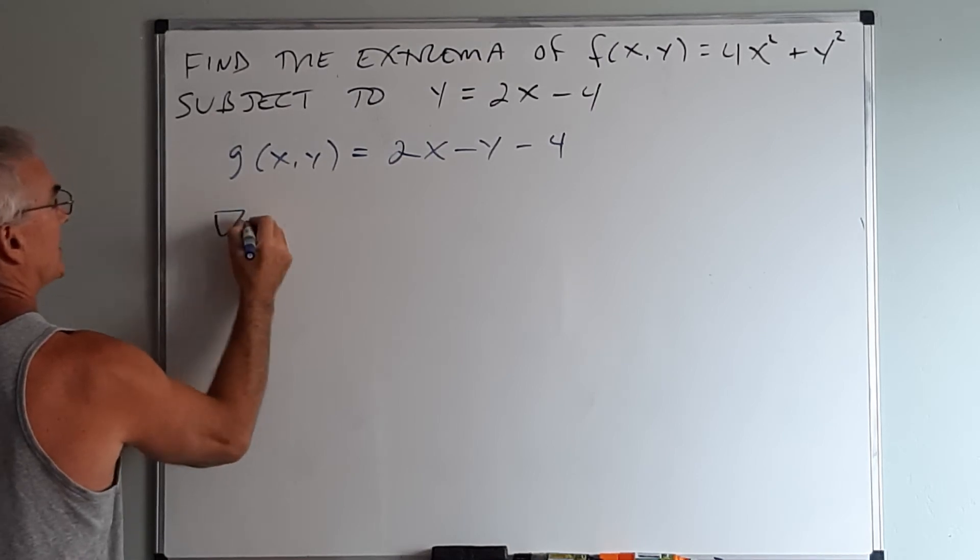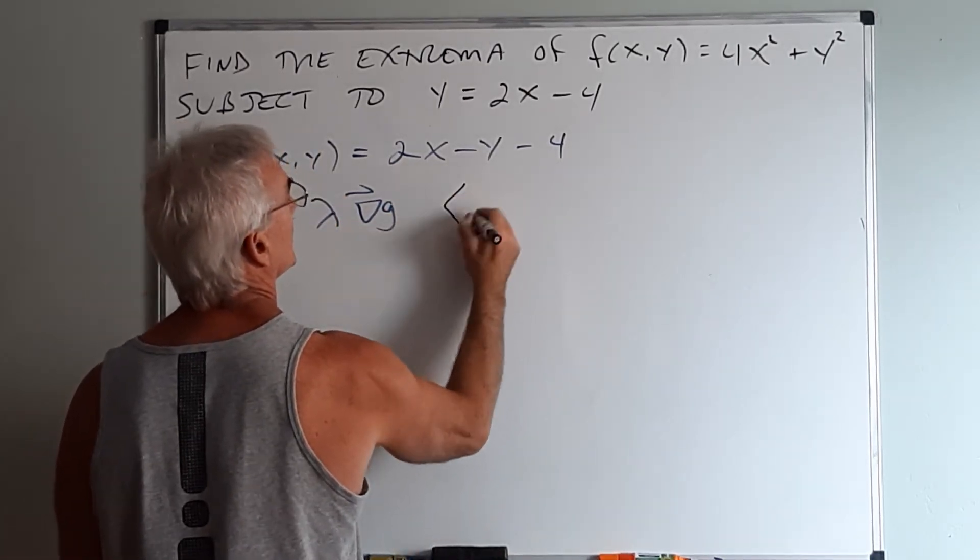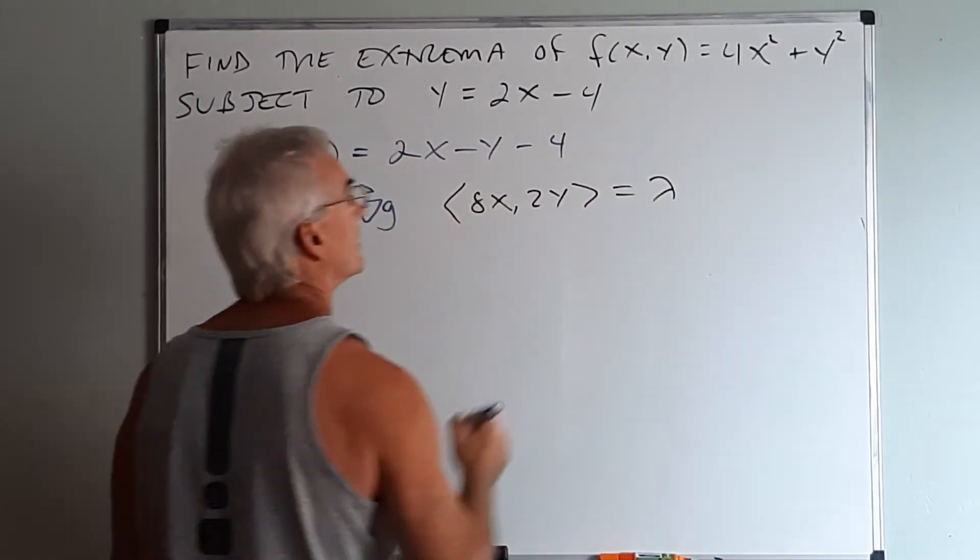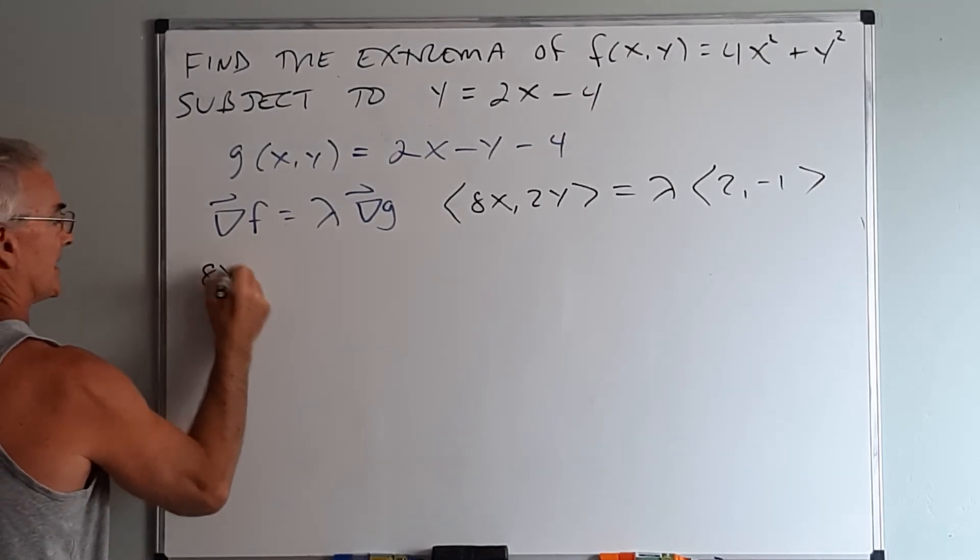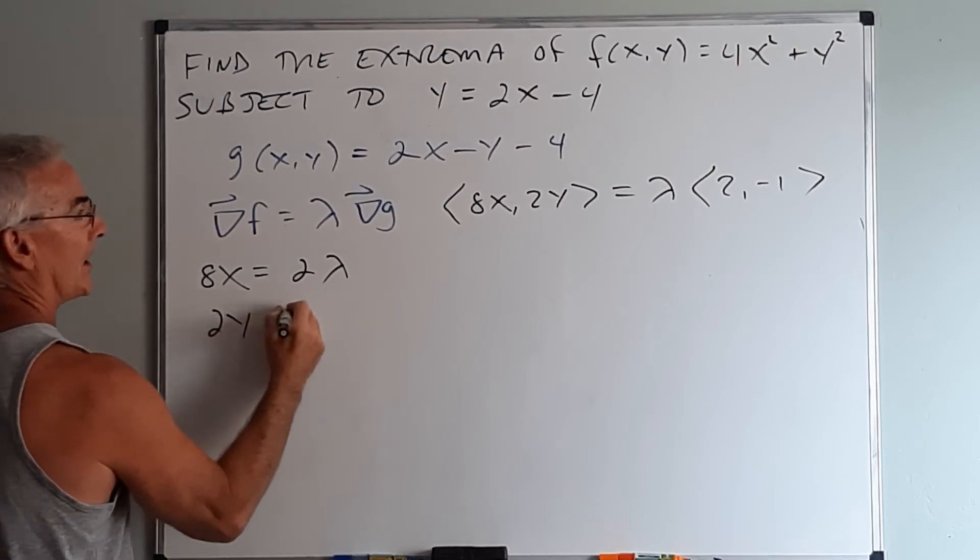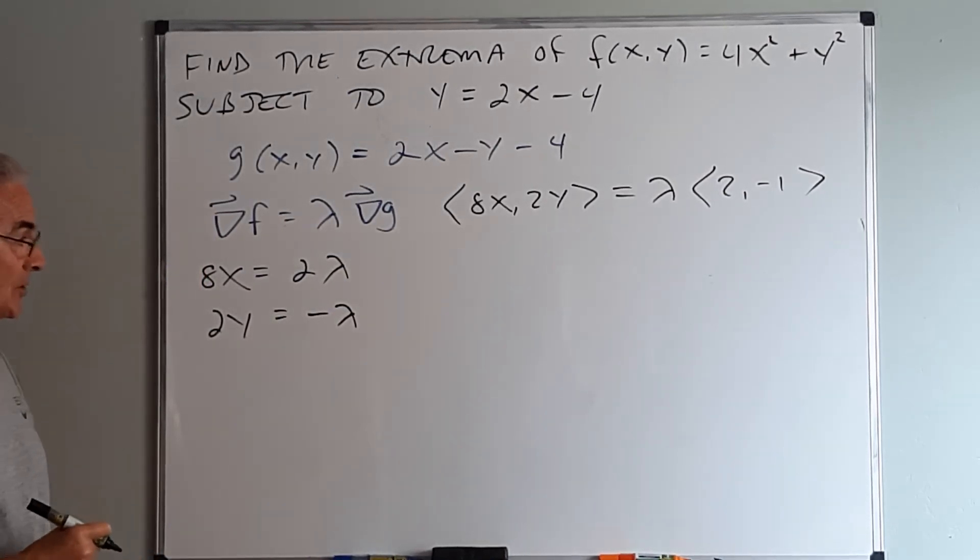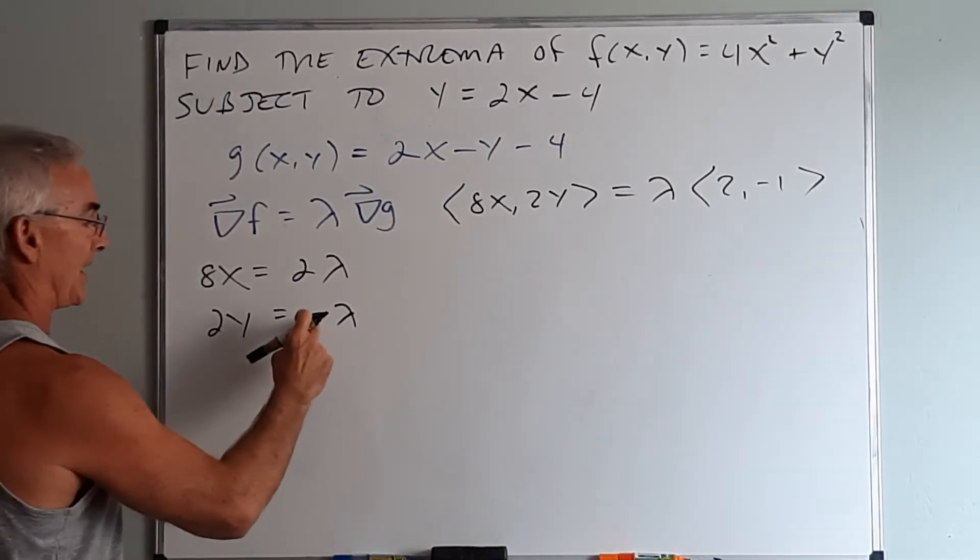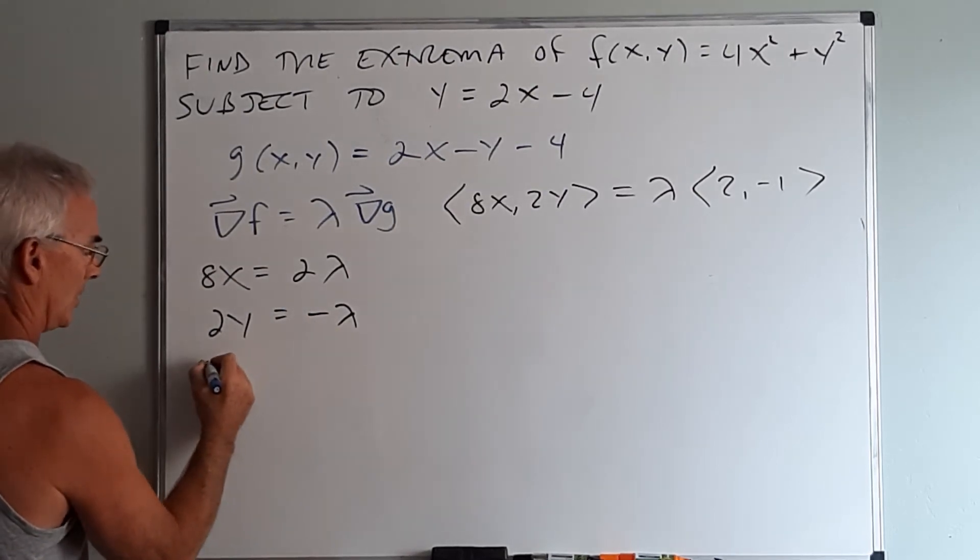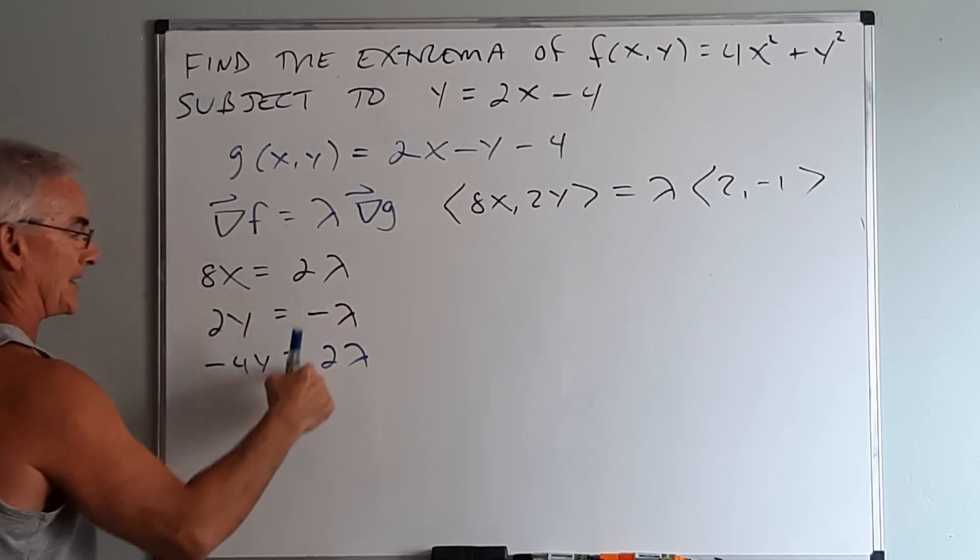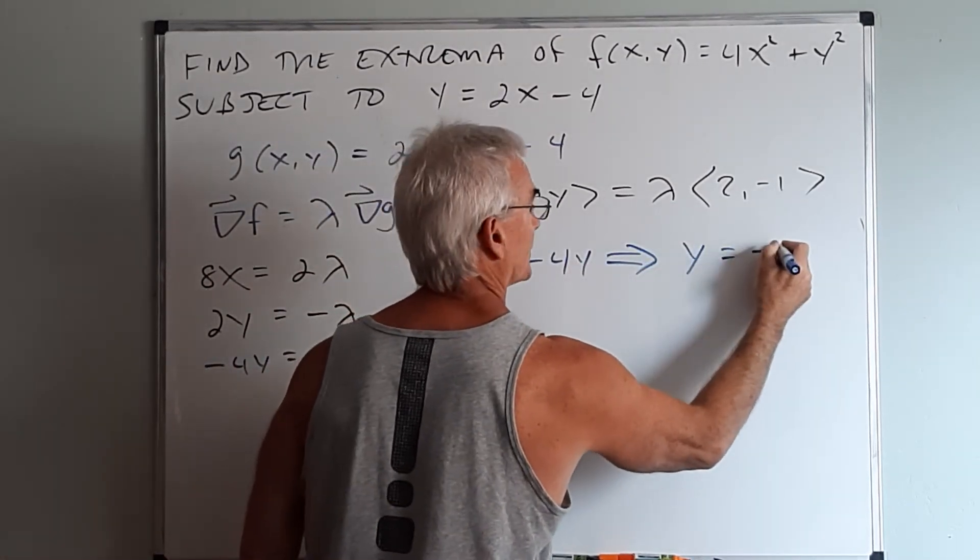Now at this point here we will set up this equation and then we will solve. So the gradient of f would be 8x, 2y. The gradient of g would be 2, negative 1. And this gives us two very simple equations. It gives us that 8x equals 2 times lambda. It gives us that 2y equals negative 1 times lambda. Our goal is not to solve for lambda. Sometimes you can solve for lambda and it will be really nice. Really what we want to do is use the fact that we know this relationship to set these equal to each other. So we notice in the second equation if I multiply both sides by negative 2, I'll get negative 4y equals positive 2 lambda and now the two equations are equal. So I would get that 8x equals negative 4y or y equals negative 2x.